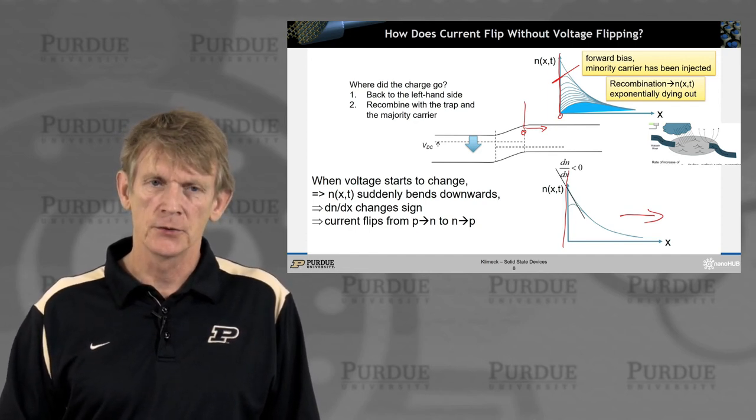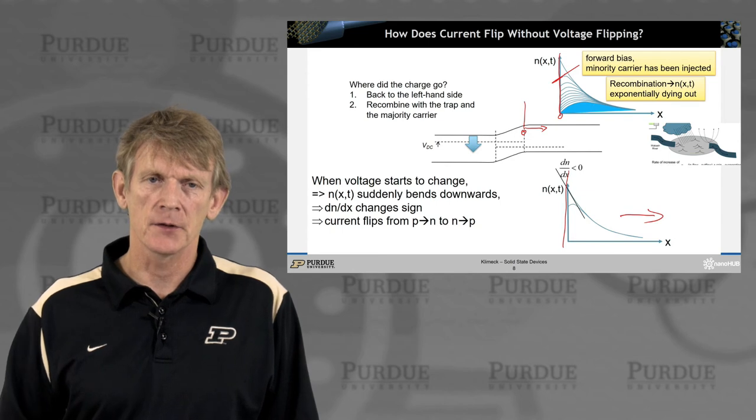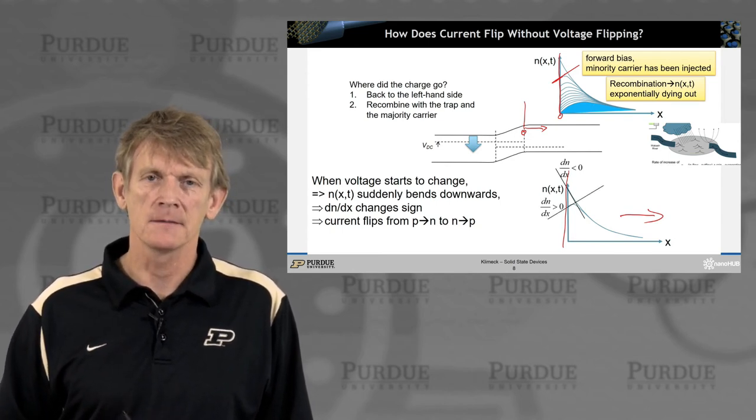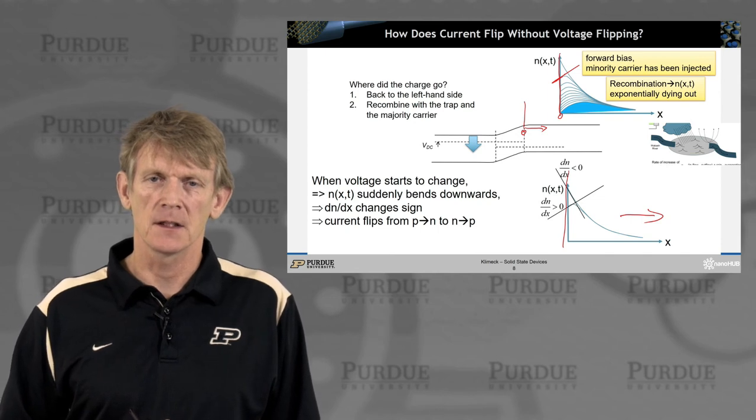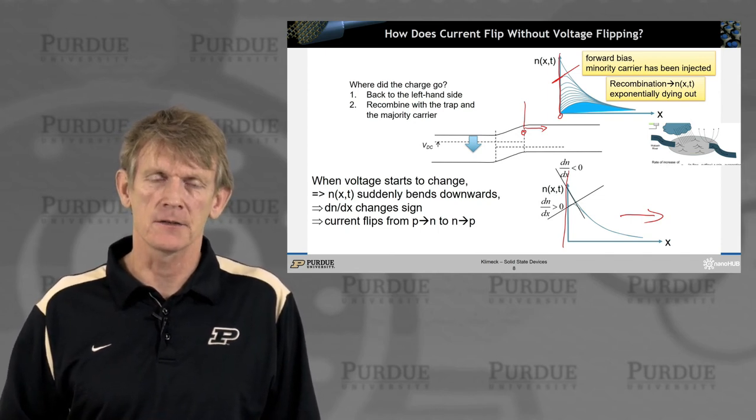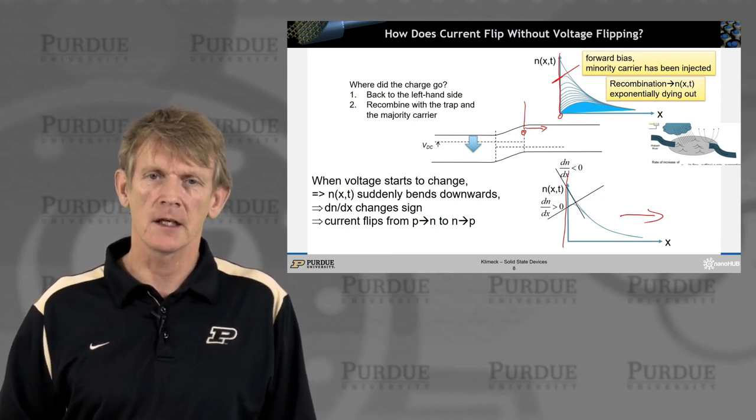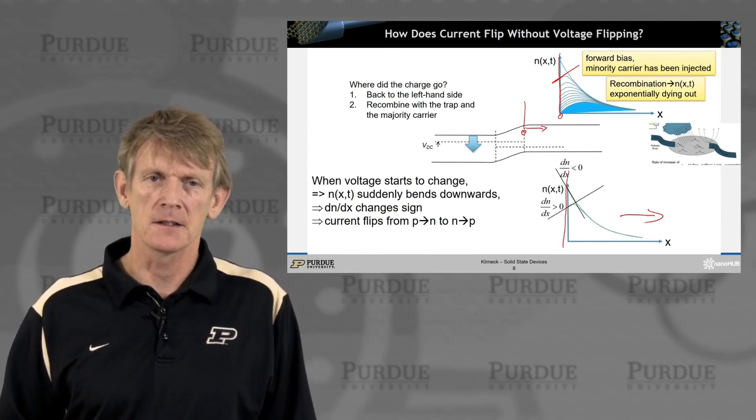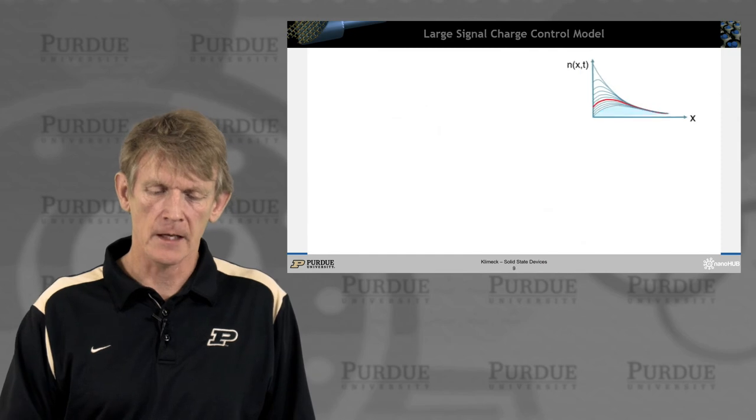And due to the time it takes for the carriers to drain out, only the slope changes right here on that interface, and therefore current can change sign. So current can respond instantaneously, but the charge that is under this curve, the distribution of carriers, can only change at the edges.